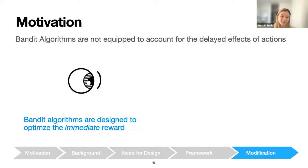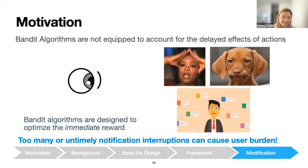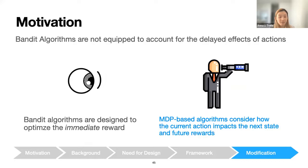The most commonly used RL algorithms in mobile health interventions are bandit algorithms — one of the simplest types. Bandit algorithms are commonly used because of their ability to run reliably and stably in an online environment, which is especially critical for high-stakes clinical trial settings. However, bandit algorithms are not designed to account for delayed effects of actions. Classic bandit algorithms optimize the immediate reward and do not account for how the current action impacts a user's responsiveness to future actions.